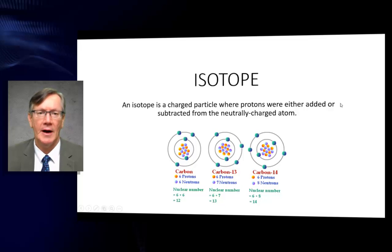Isotope. An isotope is a charged particle where protons were either added or subtracted from the neutrally charged atom. If you notice here, carbon-12 has six protons and six neutrons. Remember all carbon has six protons. Carbon-13 has six protons and necessarily must have seven neutrons. Carbon-14 also has six protons and eight neutrons.